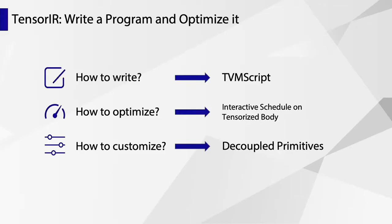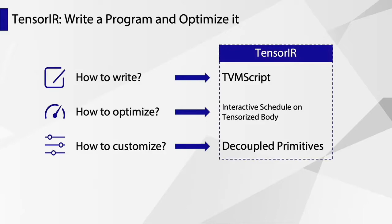TensorIR defines a new program paradigm: write a program and optimize it. Previously we could either write a program or optimize a tensor expression, but now we can write a program and optimize it. To address the three challenges, we have three parts: TVMScript to write the program and make it runnable on tensor hardware; interactive schedule on tensorized body to optimize the written program; and decoupled new design primitives to make it easy to cover every point in the search space. Together, these three parts form TensorIR.